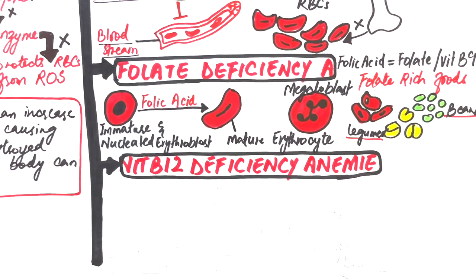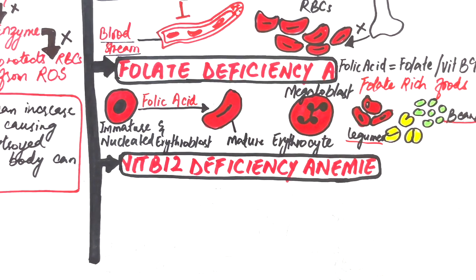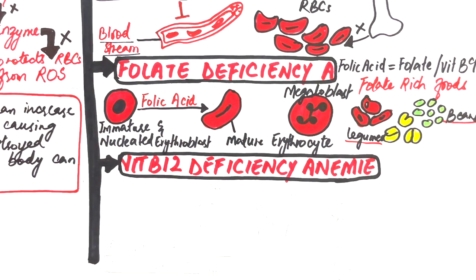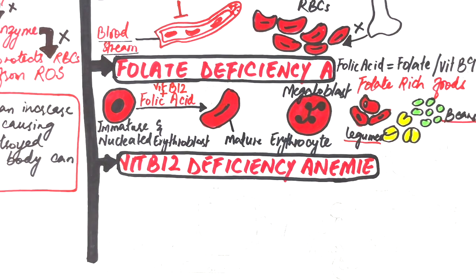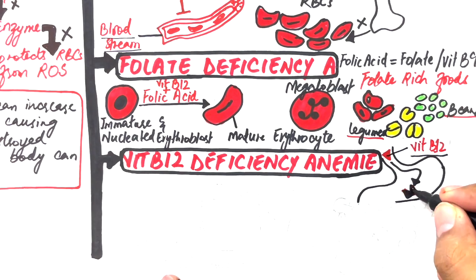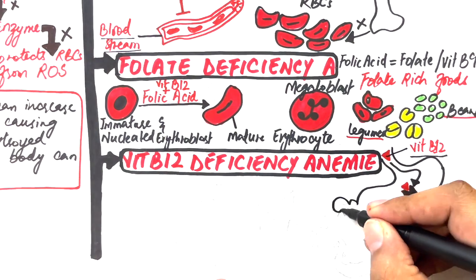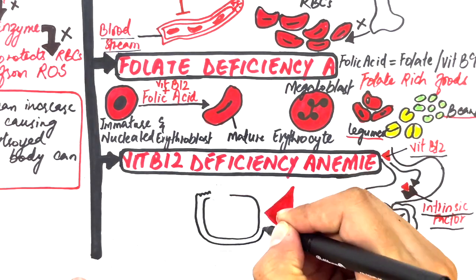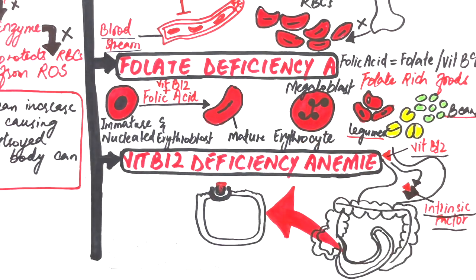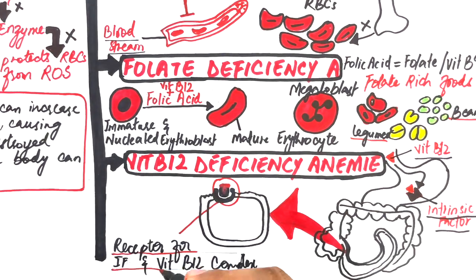Vitamin B12 deficiency anemia, also called pernicious anemia, results from inadequate levels of vitamin B12, also called cobalamin. Just like folic acid, vitamin B12 has an important role in red blood cell maturation. Vitamin B12 is taken from food and absorbed into the bloodstream with the help of intrinsic factor — a protein released from parietal cells of the stomach — which unites with dietary vitamin B12 and is absorbed through enterocytes at the ileum. The reason intrinsic factor must unite with vitamin B12 is that enterocytes of the ileum have receptors for intrinsic factor, not for vitamin B12 directly. The clinical features of pernicious anemia are the same as in folate deficiency anemia.